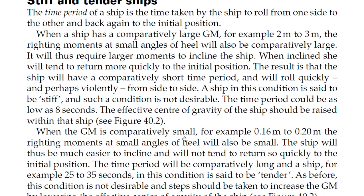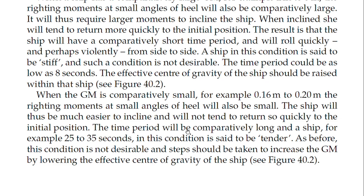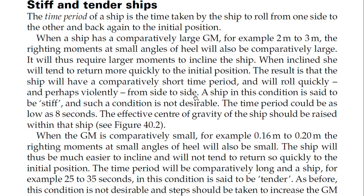To correct a stiff ship, the effective center of gravity should be raised. Since the center of gravity is much lower in a stiff ship, you shift the weight upward to raise the G value. In a stiff ship: GM is large, the righting moment at small angles is very large, it requires a large moment to incline the ship, and it returns to its initial position very quickly and vigorously.